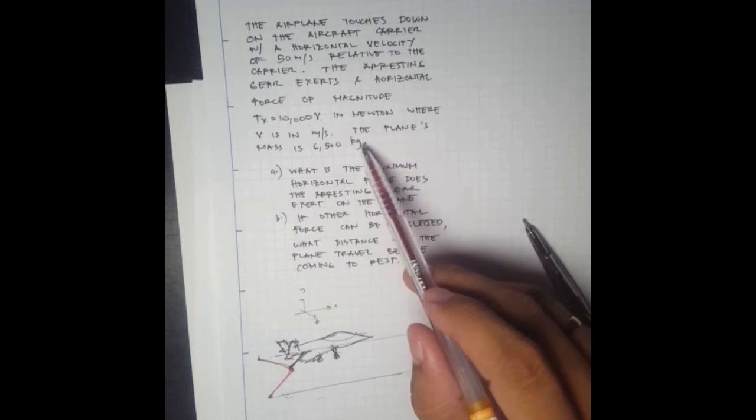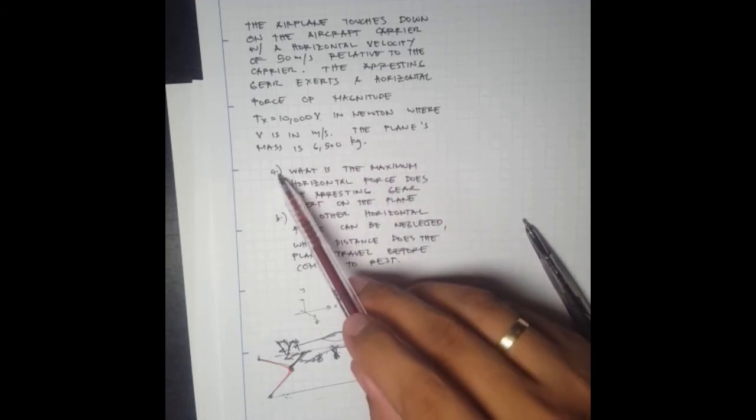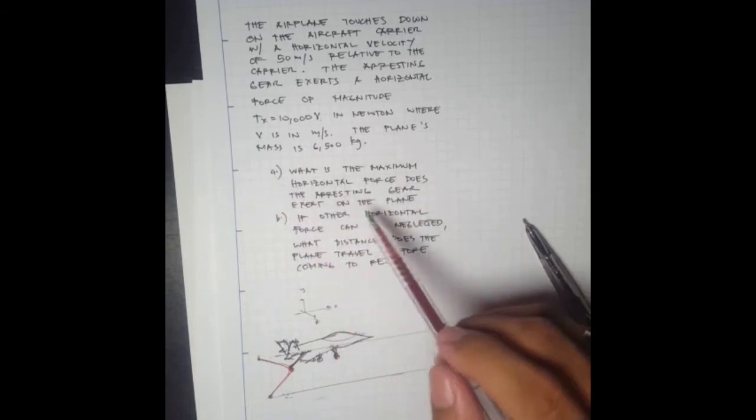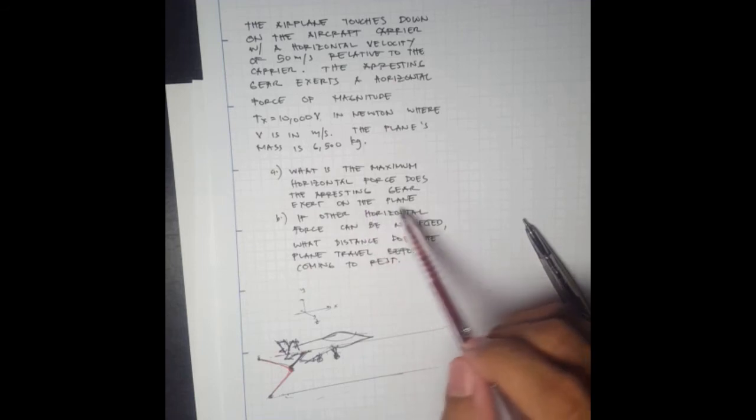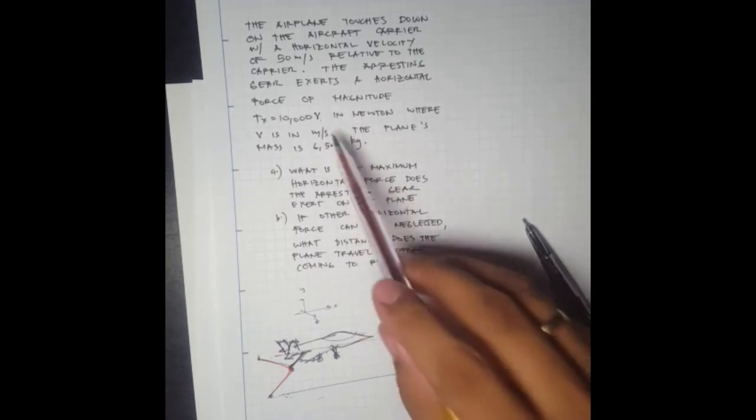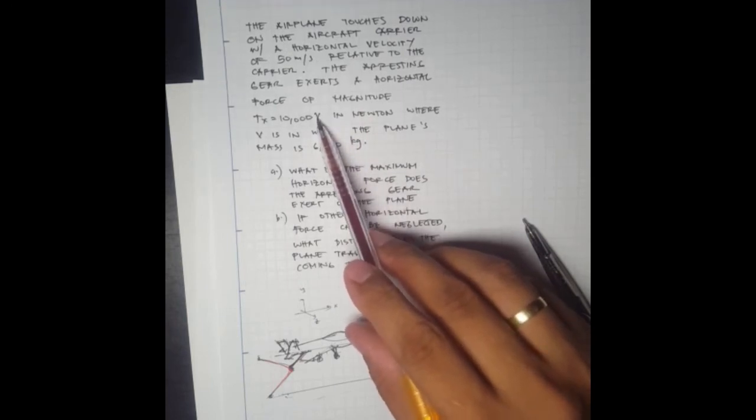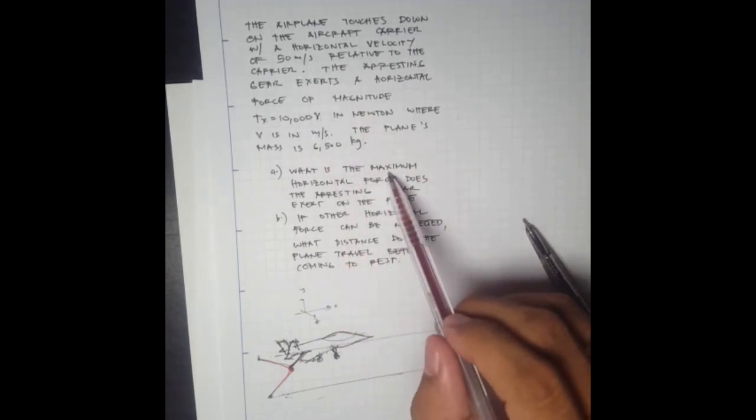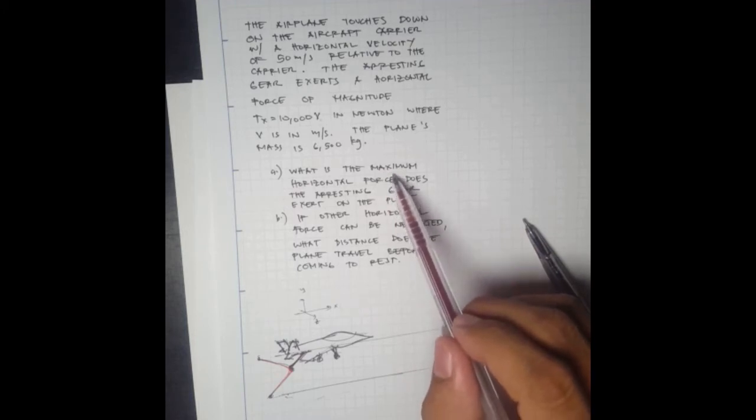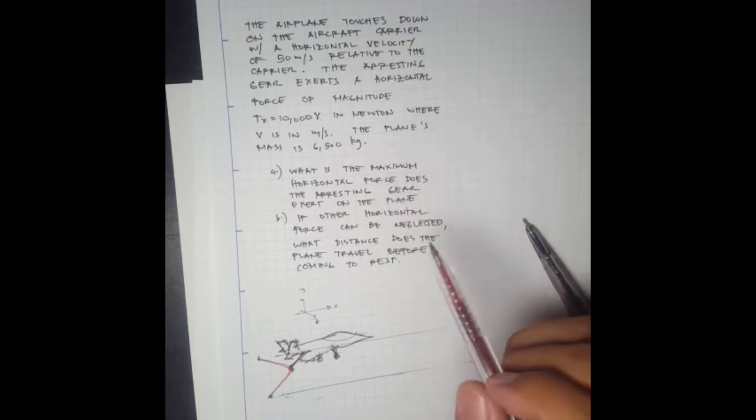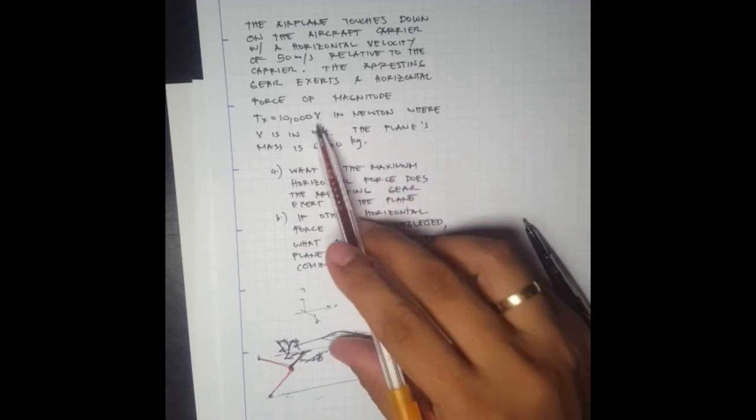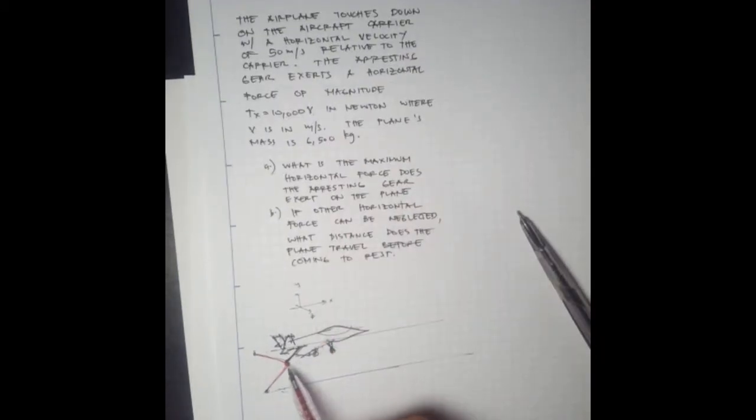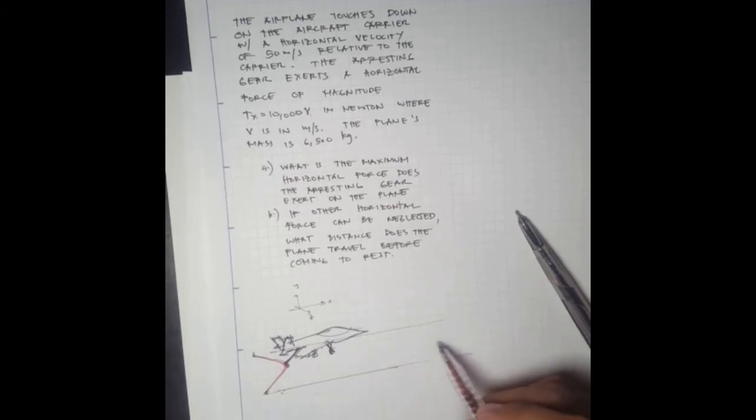The plane's mass is 6,500 kilograms. We are asked to find: (a) What is the maximum horizontal force the arresting gear exerts on the plane? The higher the velocity, the higher the force, so the maximum is at the initial velocity.